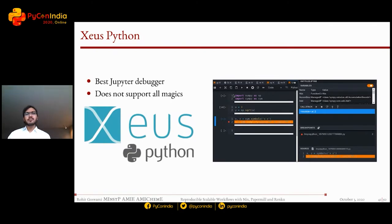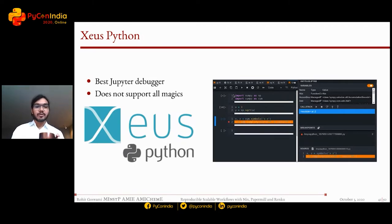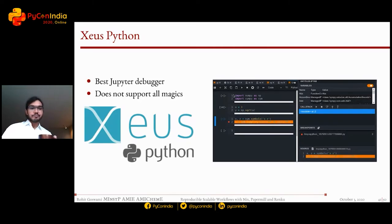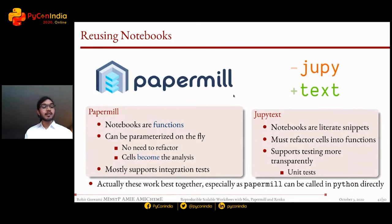I've been programming a long time and have not found anything better than GDB for debugging. Therefore, xeus-python — which does not support many of the magics people know and love — is still the best Jupyter debugger because it gives you an interface almost exactly like GDB, and that's fantastic.